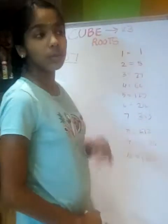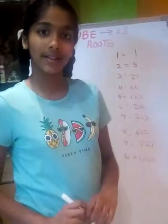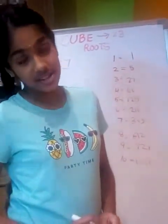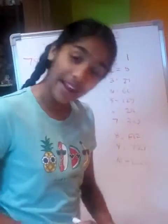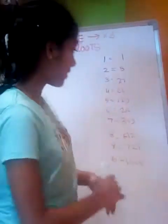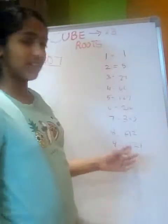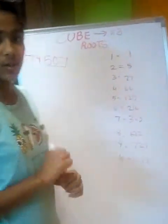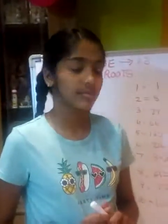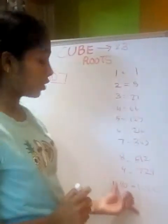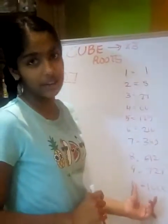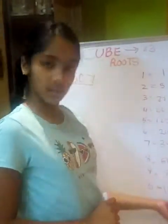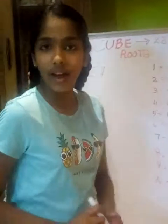8 cubed: 8 into 8 is 64, and 64 into 8 is 512. 10 cubed is also 10 into 10, which is 100, and 100 into 10 is 1000.